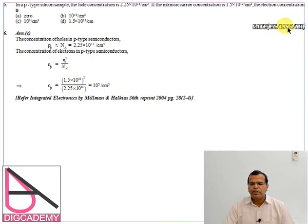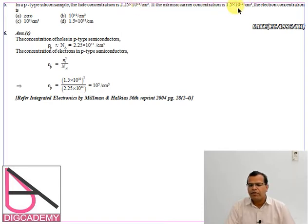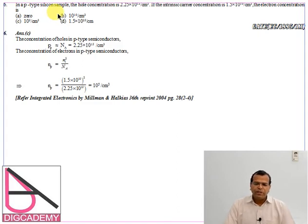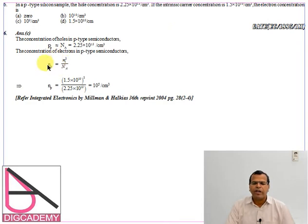GATE 1995 question: in a P-type silicon sample, hole concentration is 2.25 × 10^15 and intrinsic carrier concentration is 1.5 × 10^10. You need to find the electron concentration, i.e., the minority carrier concentration. The formula is: np = Ni² / Na, where np stands for the concentration of electrons in a P-type material. Substituting gives the answer directly.